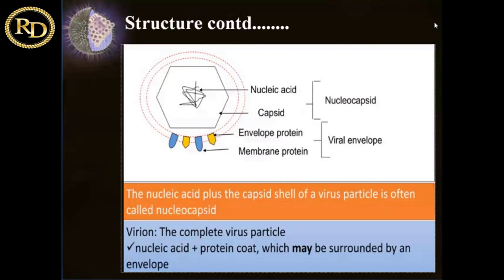The nucleic acid can be segmented or unsegmented, and may be present in a linear or circular manner. The covering or capsid is a protein shell enclosing the genetic material — it is a protective coat. It consists of several oligomeric subunits made up of proteins called capsomers. The capsid together with the nucleic acid is called the nucleocapsid. So the nucleic acid core plus the capsomers together form the nucleocapsid.